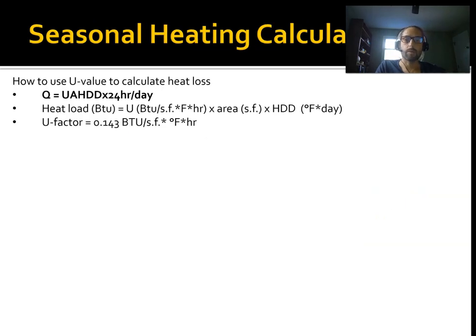Here's how we can apply them to a seasonal heating calculation. Remember, our heating load was UA delta T. Our seasonal heating load calculation is UA HDD times 24. And 24 hours per day converts that to the proper unit. UA delta T is BTUs per hour. This is going to be just BTUs.